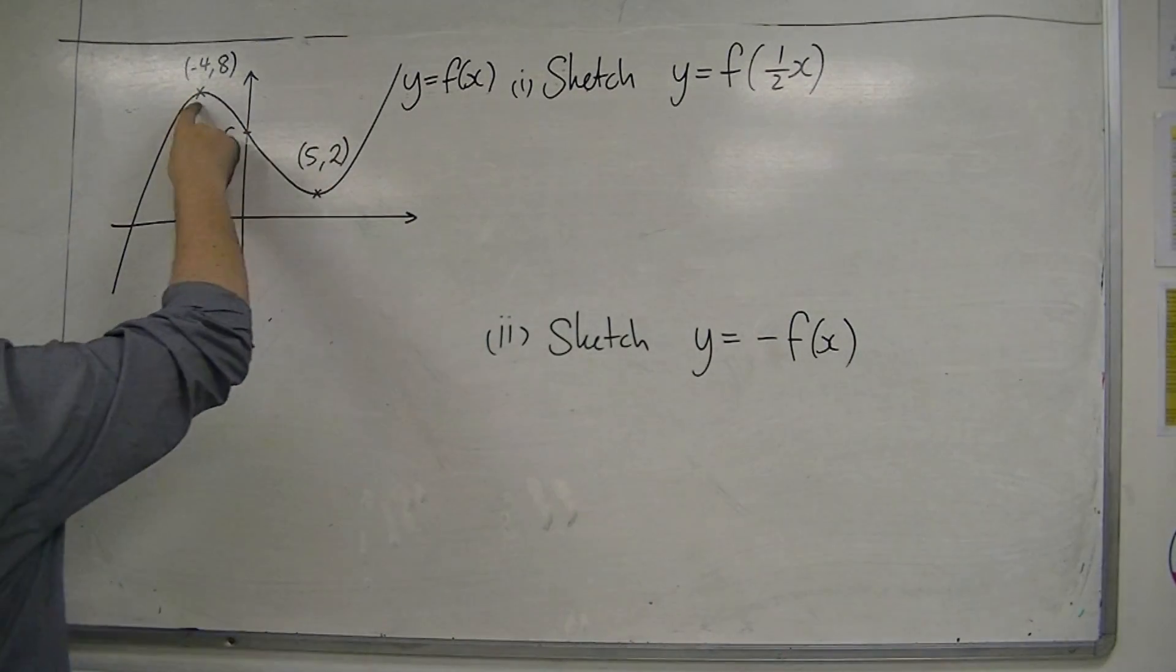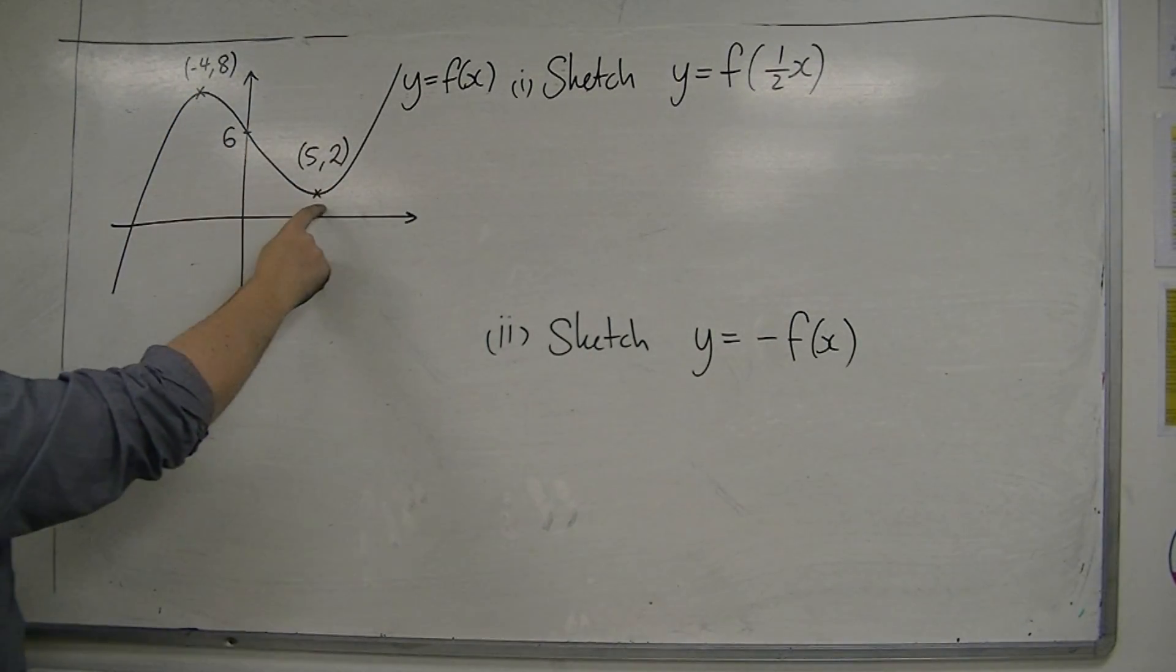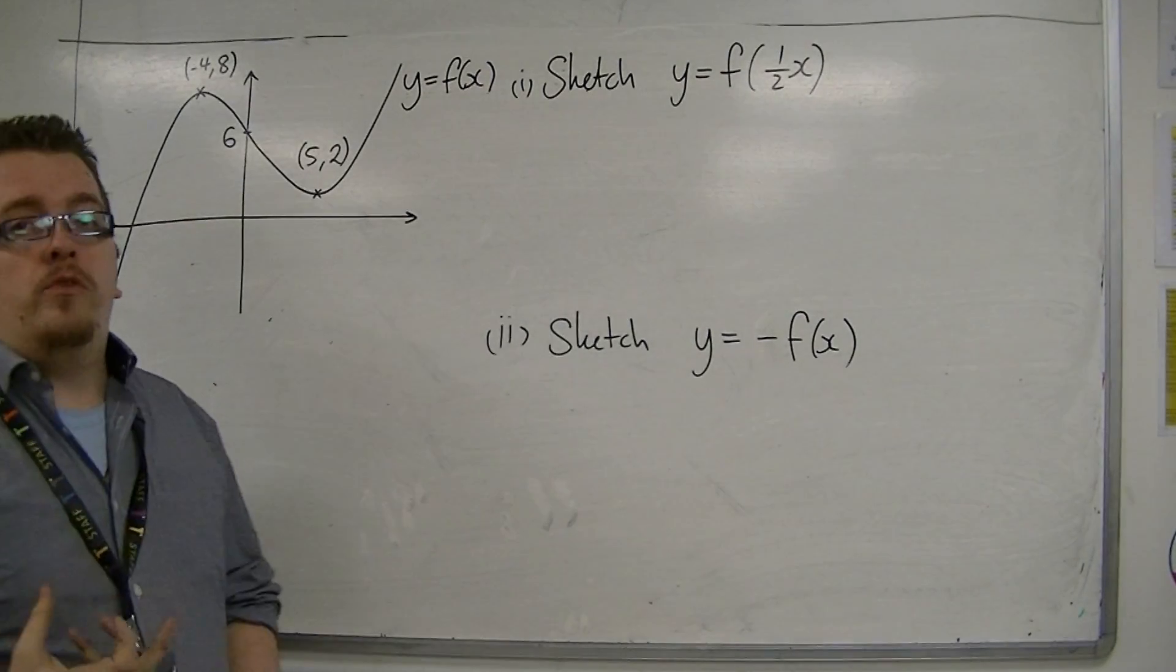I've got the two stationary points, minus 4, 8, and 5, 2, and I know where it crosses the y-axis.